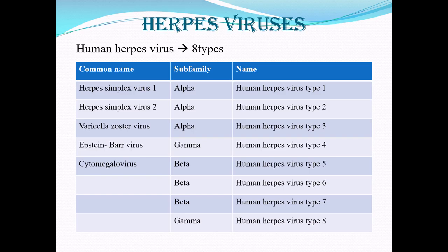Now we will look at the classification. Herpes simplex virus 1 is an alpha-type virus called human herpesvirus 1. Herpes simplex virus 2 is also an alpha virus, called human herpesvirus 2. Varicella zoster, which causes chickenpox, is again an alpha virus named human herpesvirus type 3. You have Epstein-Barr virus, which is a gamma virus called human herpesvirus type 4.